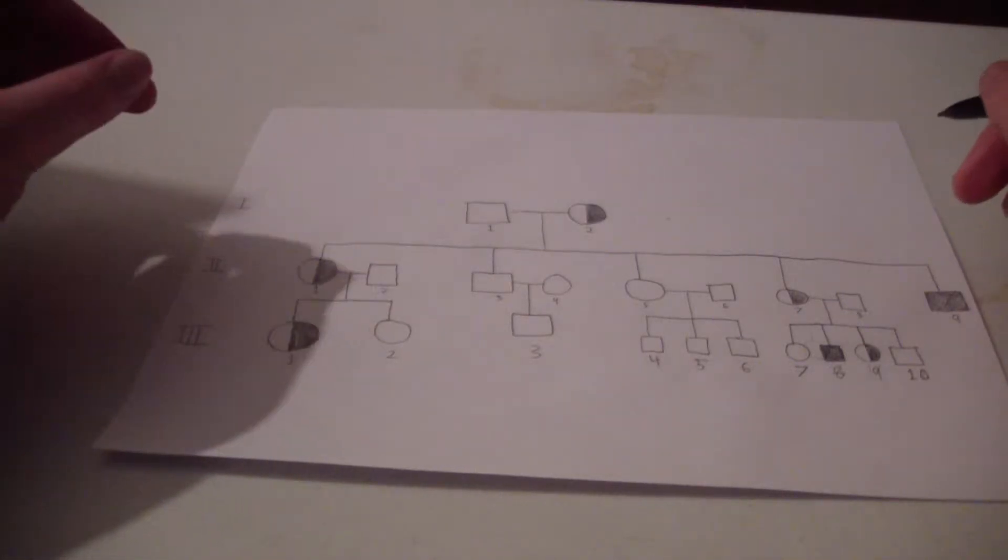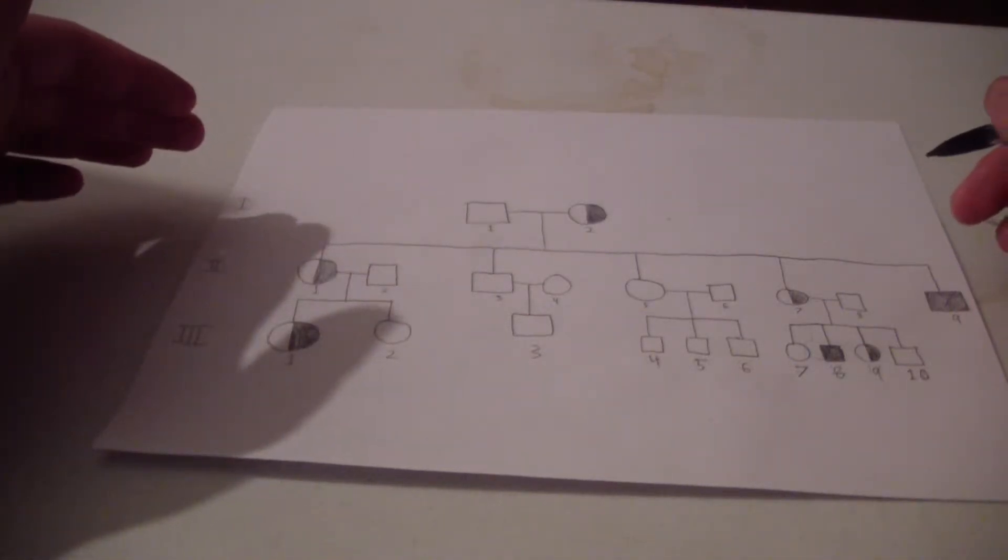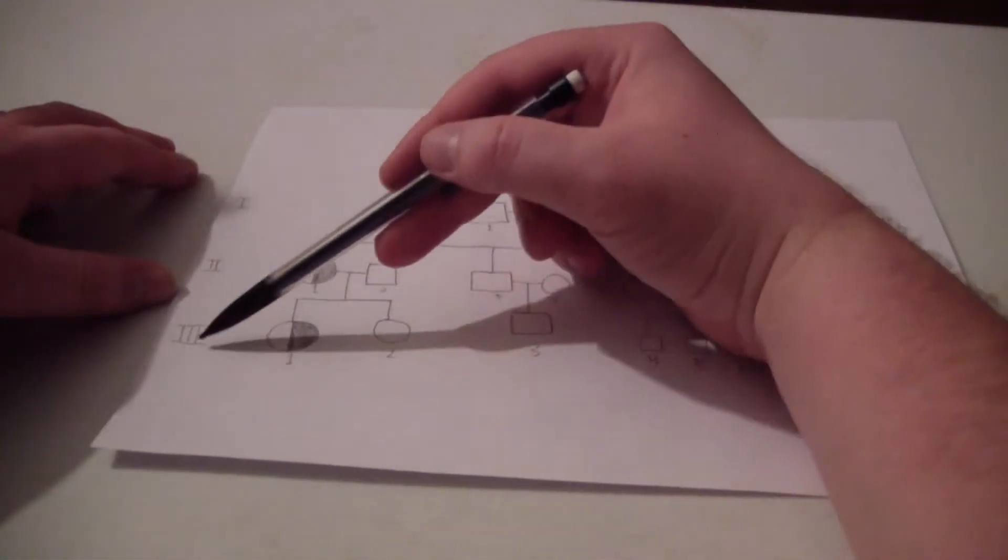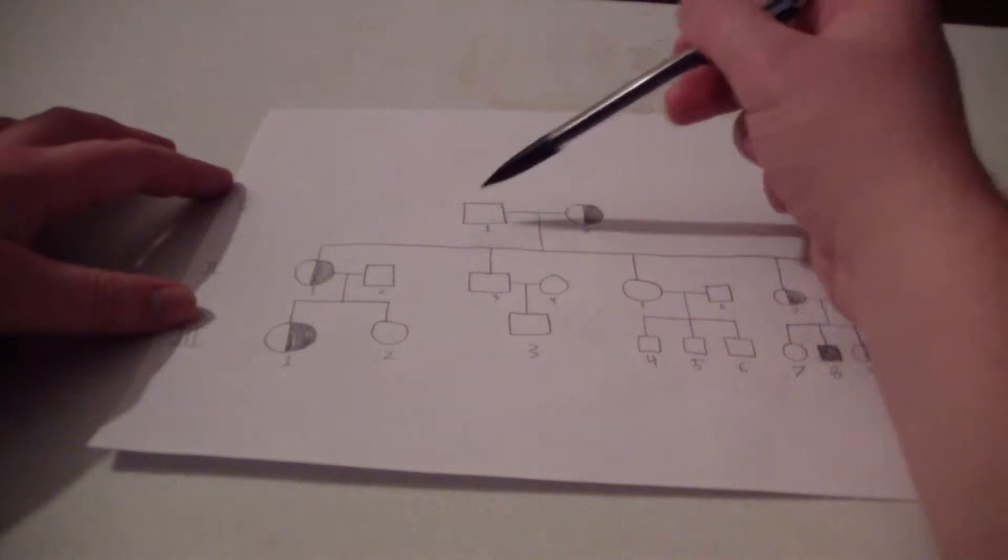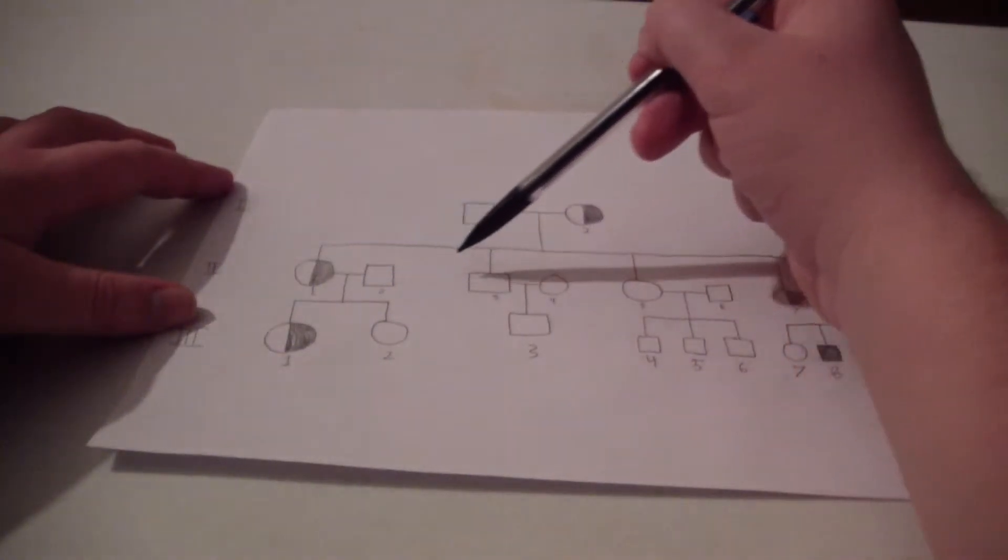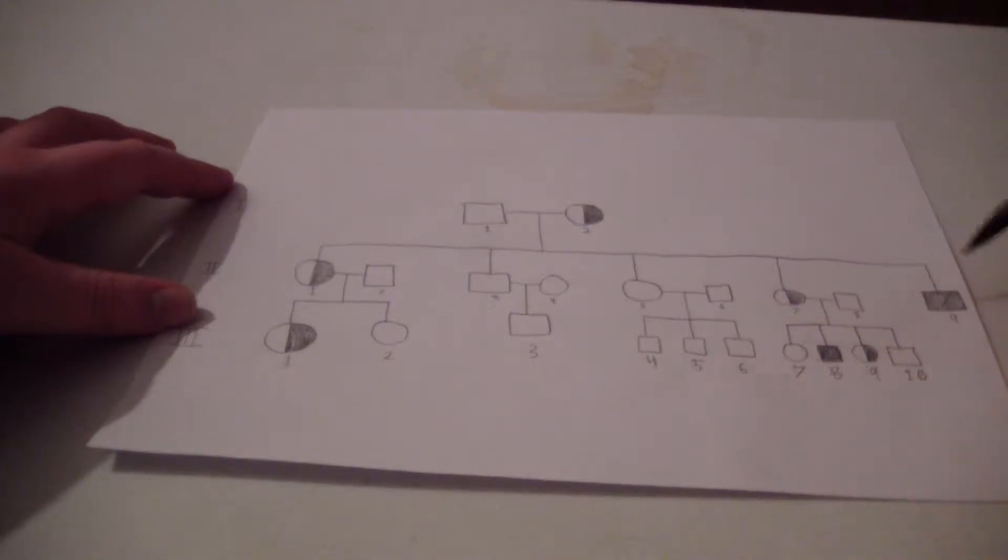You can't see the numbers very well in this video unfortunately, but what we have here is generation 1, generation 2, and generation 3. These two individuals are generation 1, these individuals right here are generation 2, and these individuals right here are generation 3.